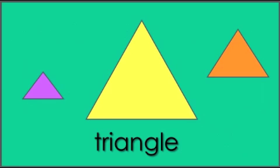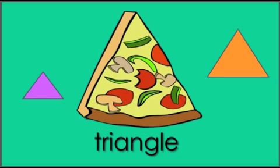This shape is a triangle. A triangle comes in different colors and sizes. Look around to find things shaped like a triangle. This slice of pizza looks like a triangle.